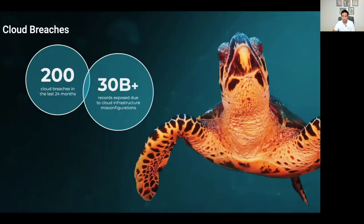At the same time we're seeing an increase in cloud adoption, and through our research we're also seeing that there have been over 30 billion records exposed due to cloud misconfigurations across 200 different breaches in the last two years. These breaches have happened in all types of organizations, and while it's easy to get started with cloud native technologies, it's also easy to make security mistakes that put systems at risk.